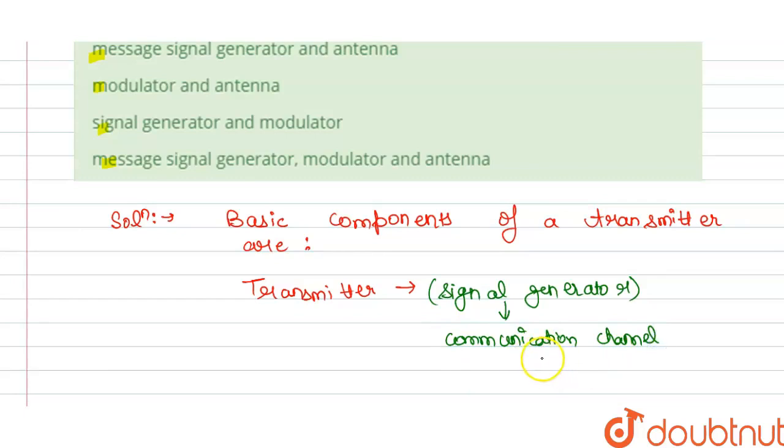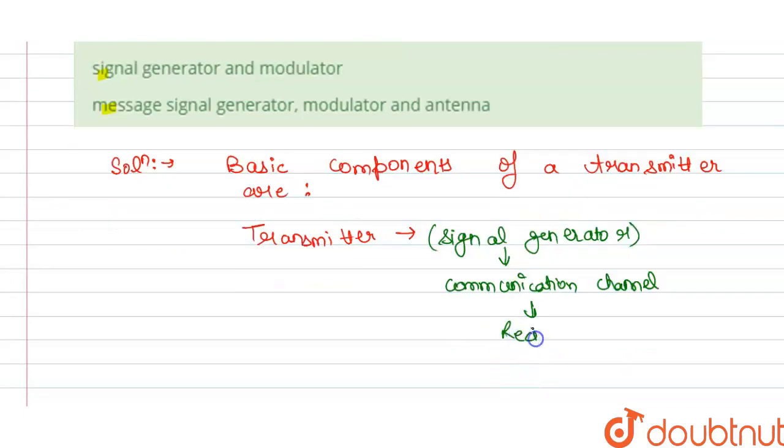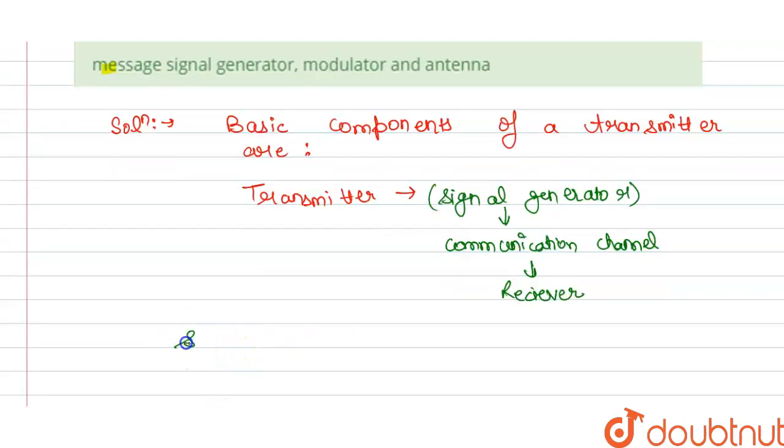And then after that, communication channel and receiver. But we have this signal generator generate the signal, but due to the noise, many information is lost, so we need one modulator. So we can write here signal generator or we can say that message signal generator, and we need a modulator that will modulate our information.